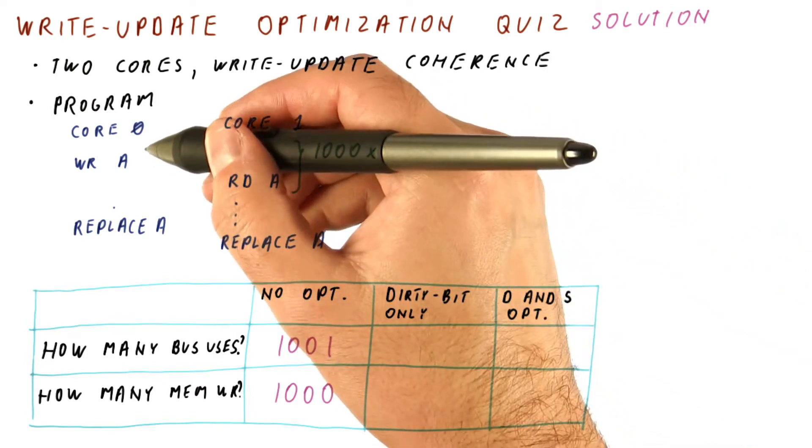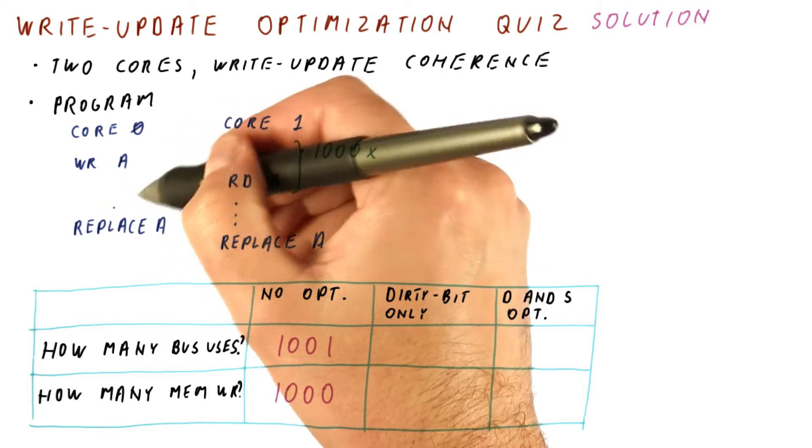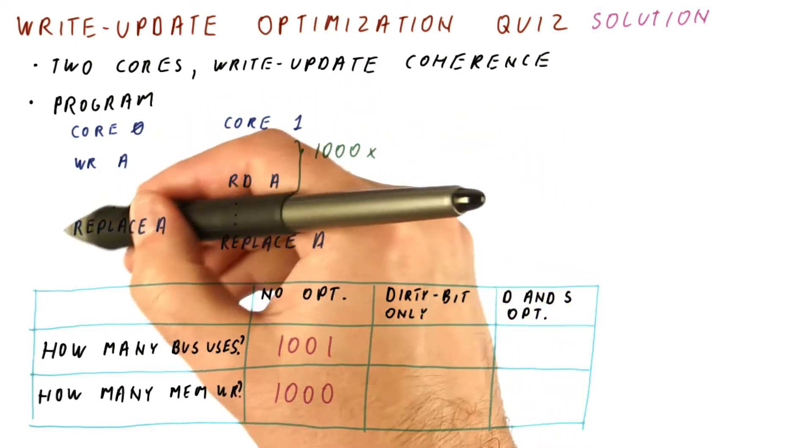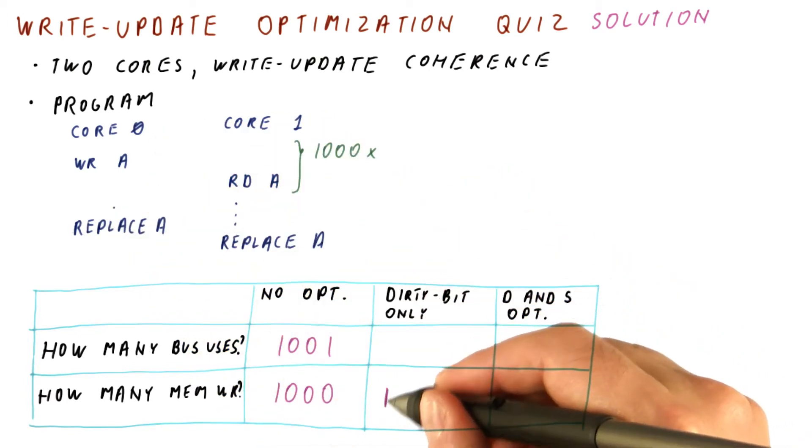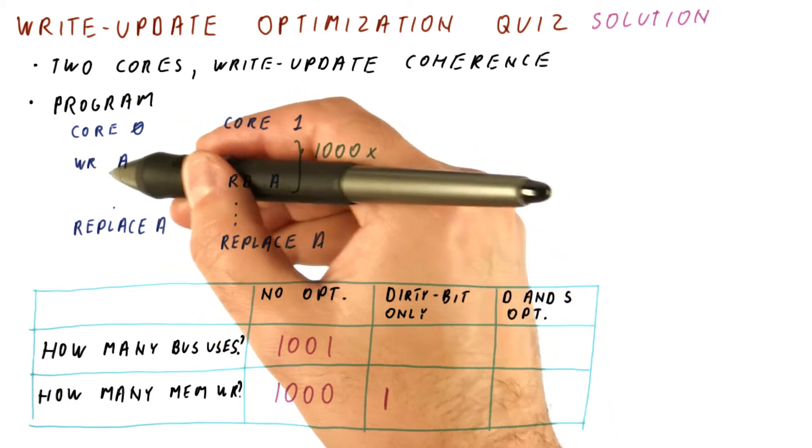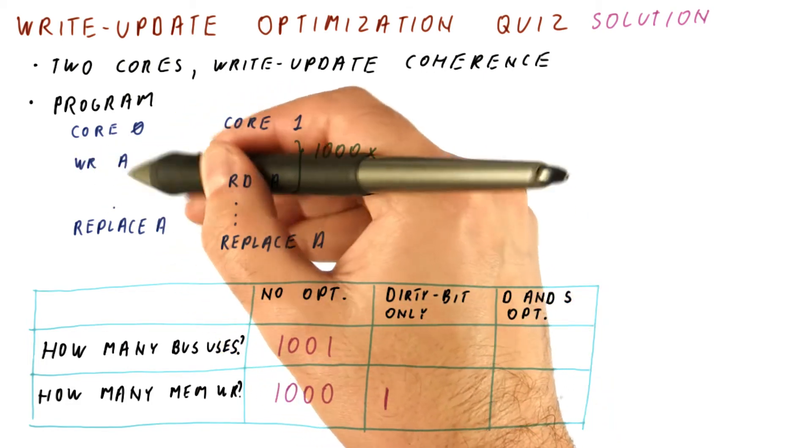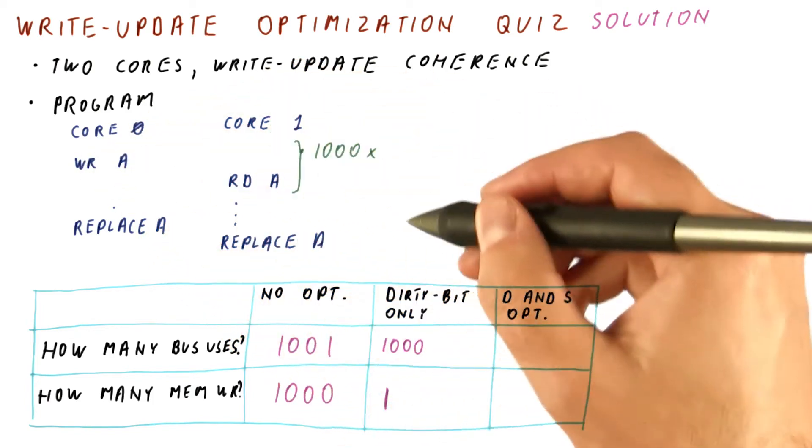Now let us look at the dirty bit only optimization. In this optimization, the writes on core 0 will all be happening to core 0's cache, and the only write to memory will be when the block is replaced. So we get only one memory write. How many bus uses do we need? Well, the first write and every subsequent write will be broadcast. So we get 1000 bus accesses because of these writes.